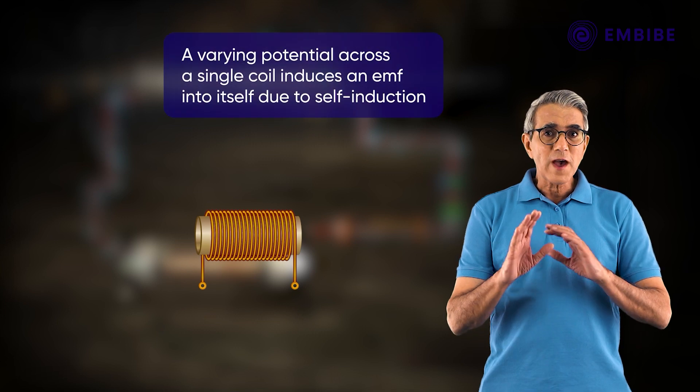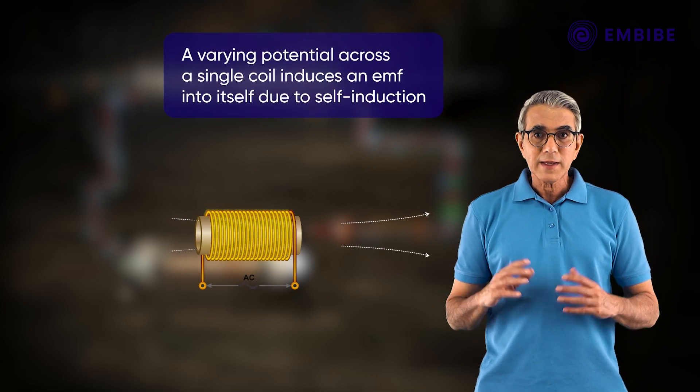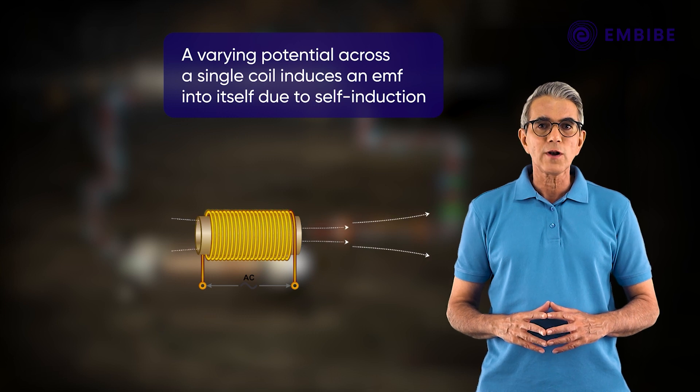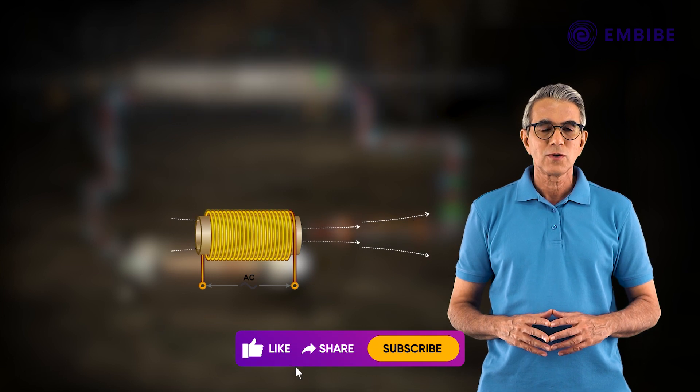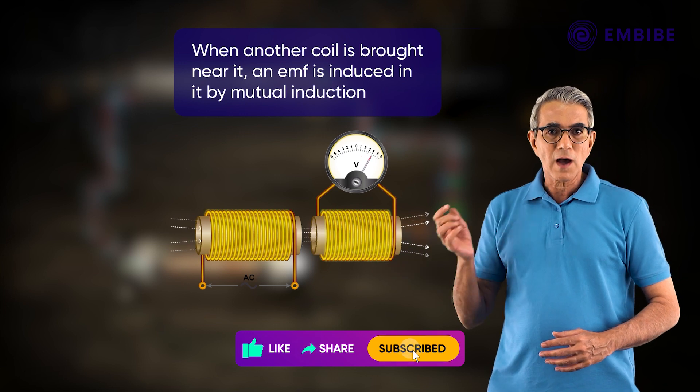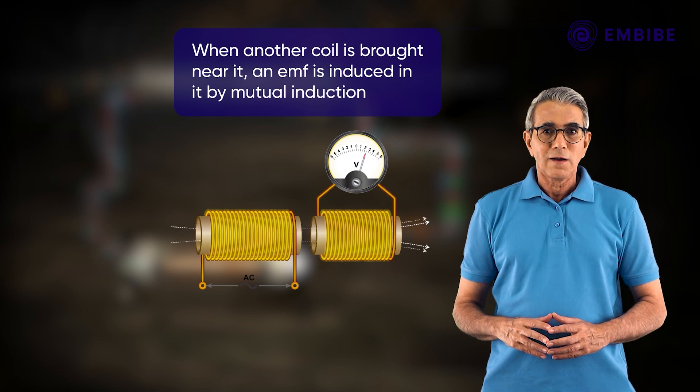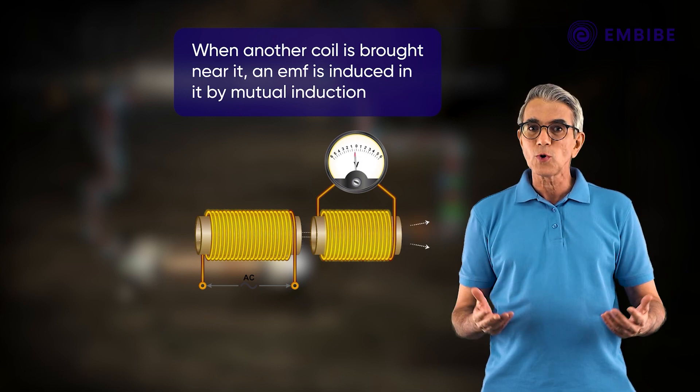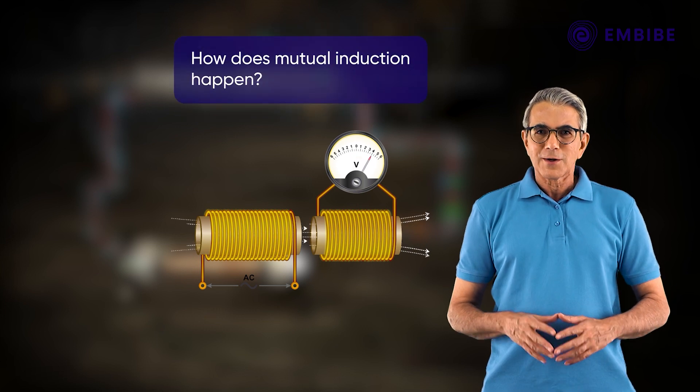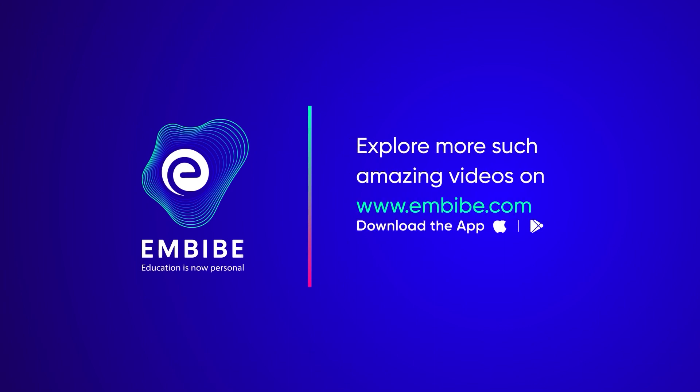When a varying potential is applied across a single coil, an EMF is induced in the coil due to self-induction. When another coil is brought near such a coil, the other coil also gets an induced EMF. This process is called Mutual Induction. To know about it in detail, stay tuned. Keep imbibing. We believe in you.